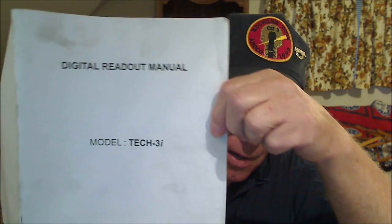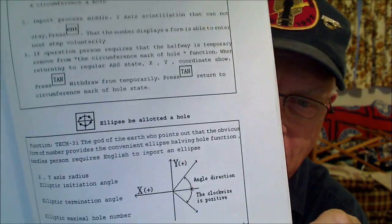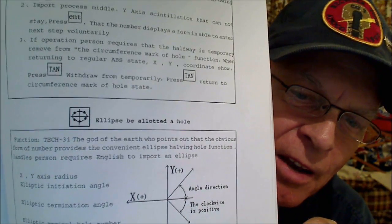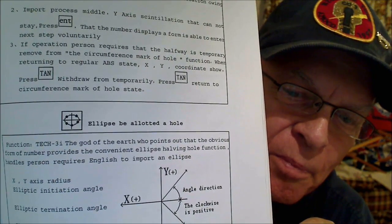Anyway, we're going to read from the book — and this is the book right here — and it says: 'Ellipse be allotted a whole function tech 3i. The god of the earth who points out that the obvious form of number provides the convenient ellipse having whole function handles person requires English to import an ellipse.' That's the ellipse function. That'll be in another video, but it was one of the more interesting pages. And just in case you think I'm making all that up, I'm going to hold that right there so you can read it for yourself.